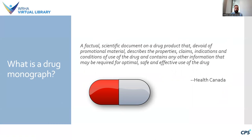It also contains any other information required for optimal, safe, and effective use of the drug. A drug monograph will usually include information concerning the name of the drug, its therapeutic or pharmaceutical classification, its actions and clinical pharmacology, its indications, and additional information.